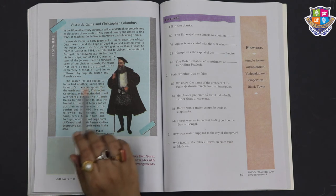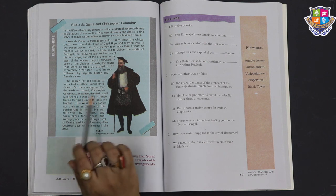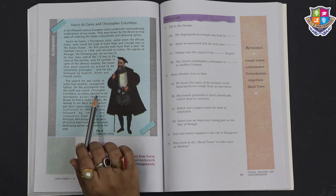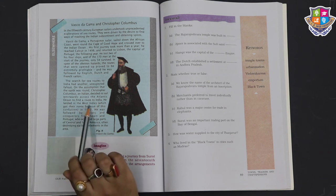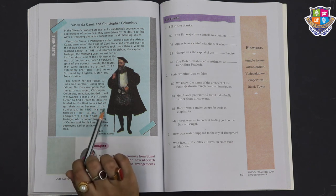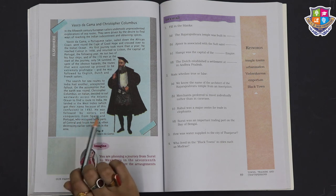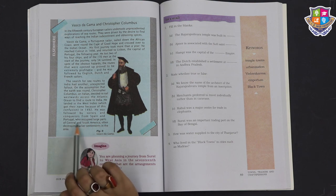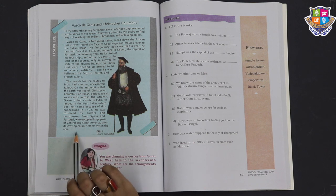The search for sea routes to India had another unexpected fallout. On the assumption that the Earth was round, Christopher Columbus, an Italian, decided to sail westwards across the Atlantic Ocean to find a route to India. He landed in the West Indies, which got their name because of his confusion, in 1492. He was followed by sailors and conquerors from Spain and Portugal, who occupied large parts of Central and South America, often destroying earlier settlements in the area. This is a picture of Vasco da Gama.